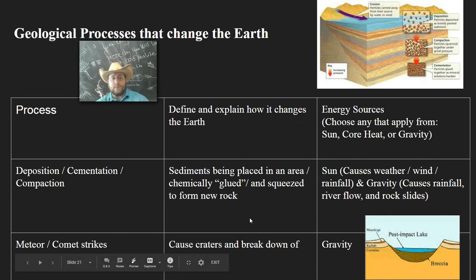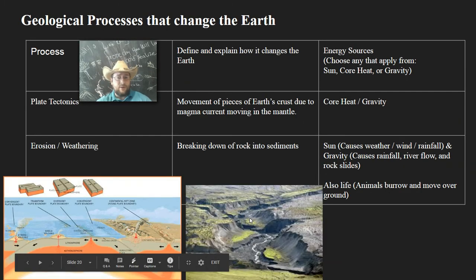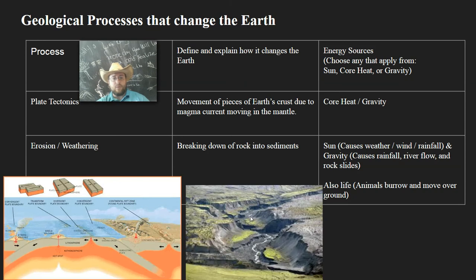Processes like erosion, deposition, and compaction are primarily caused by weather, and so the sun is the key source of energy there. Weather, wind, water evaporating, all of that has to do with sunlight. But gravity matters too. That's why rain is pulled downwards and rivers flow towards the ocean. So gravity also matters.